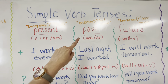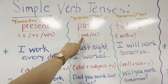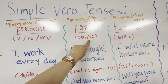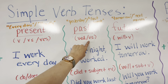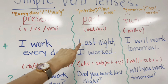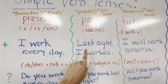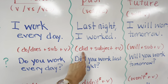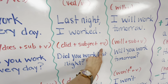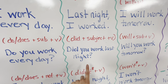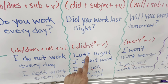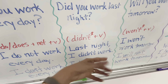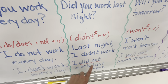Simple past uses the form of the verb with ED, or the second form — the irregular past participle of that verb. In the positive: last night, I worked. To form it as a question: did plus the subject plus the verb — did you work last night? To form it in the negative: didn't plus the verb — I didn't work. Alternately, I did not work last night.